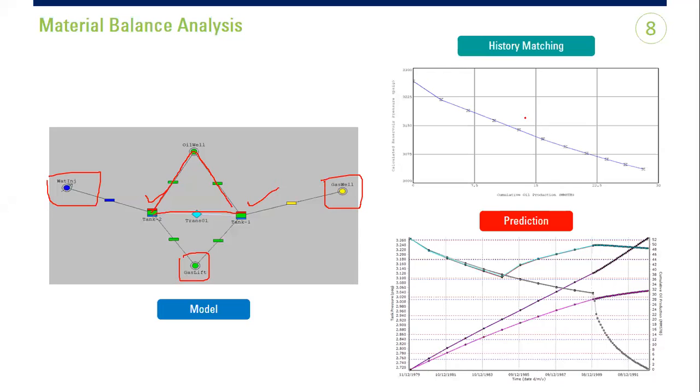And you do the history matching. You get the reservoir pressure points, the actual points from your measurement, and the model, the software, will do the matching to get this blue curve. So it means that your model mimics the actual data represented by these points. So if you are matched, if you are historically matched.